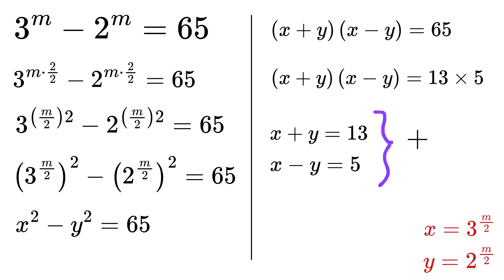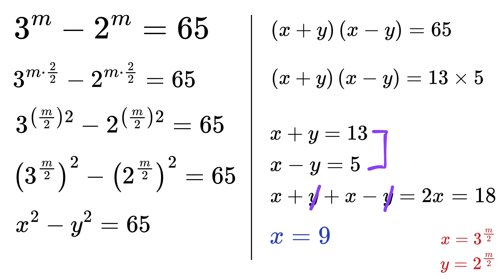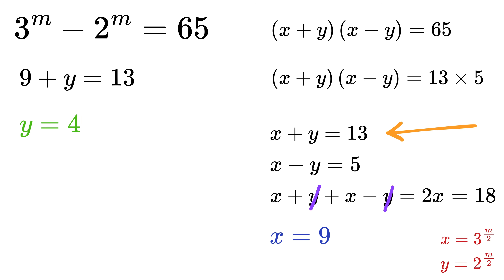First, we add both these equations. On the left side, x plus y plus x minus y becomes 2 times x, and on the right side, 13 plus 5 gives us 18. So 2 times x is equal to 18, which means x is equal to 9. Once we have x, we can plug it back into either equation. Let's use the first one. Since x is 9, therefore 9 plus y is 13, which means y must be 4.